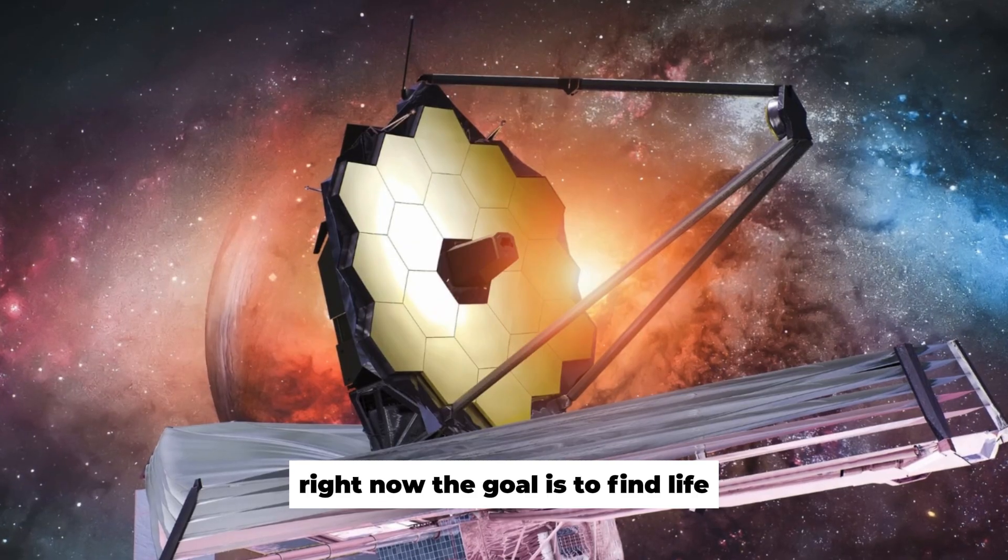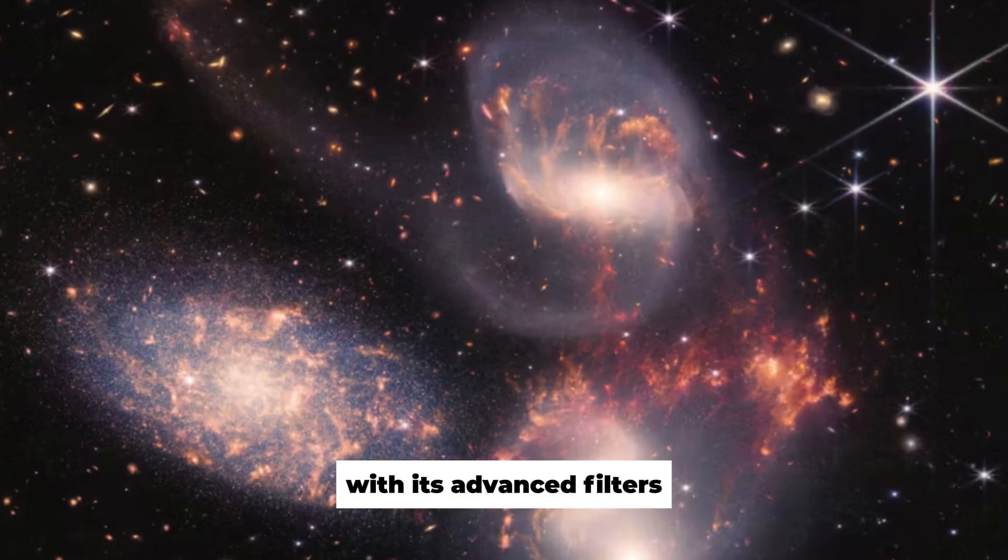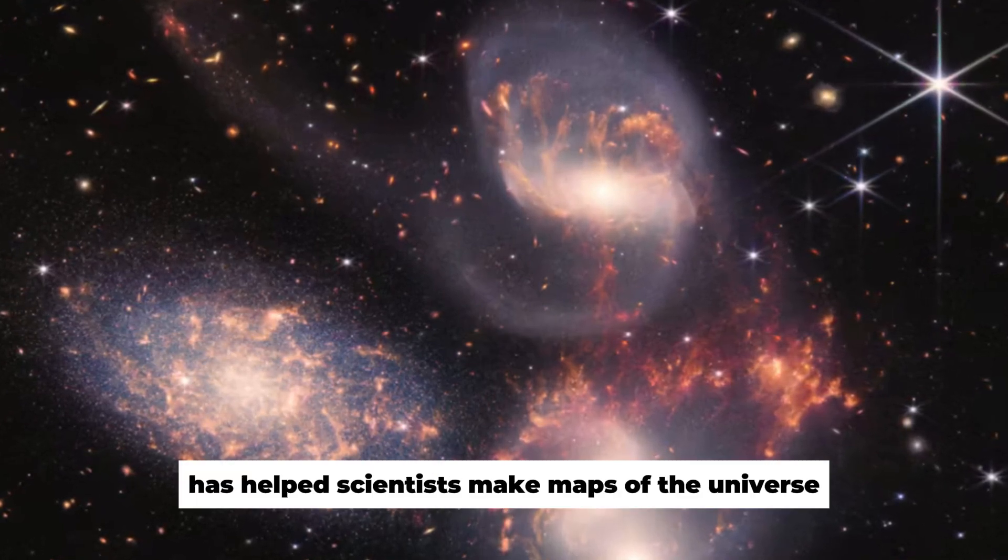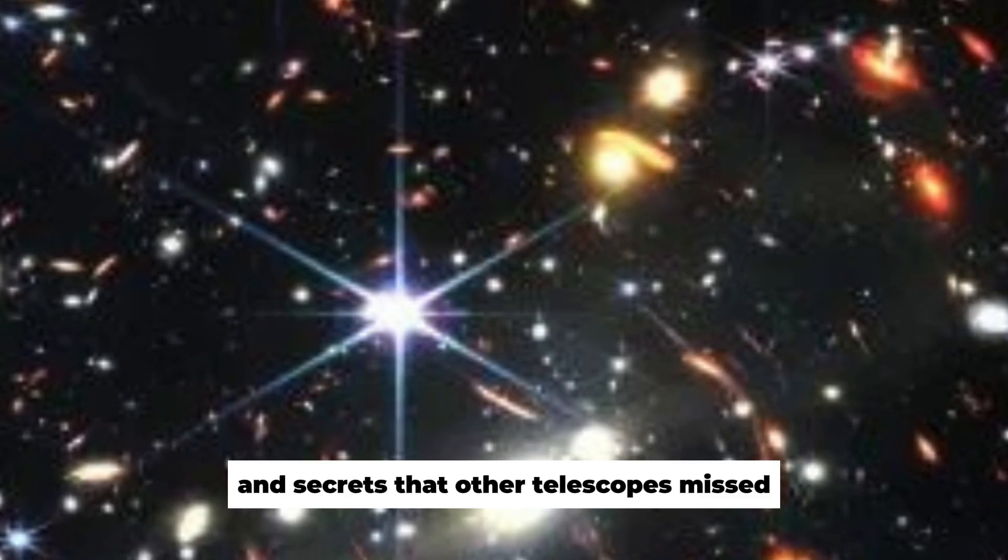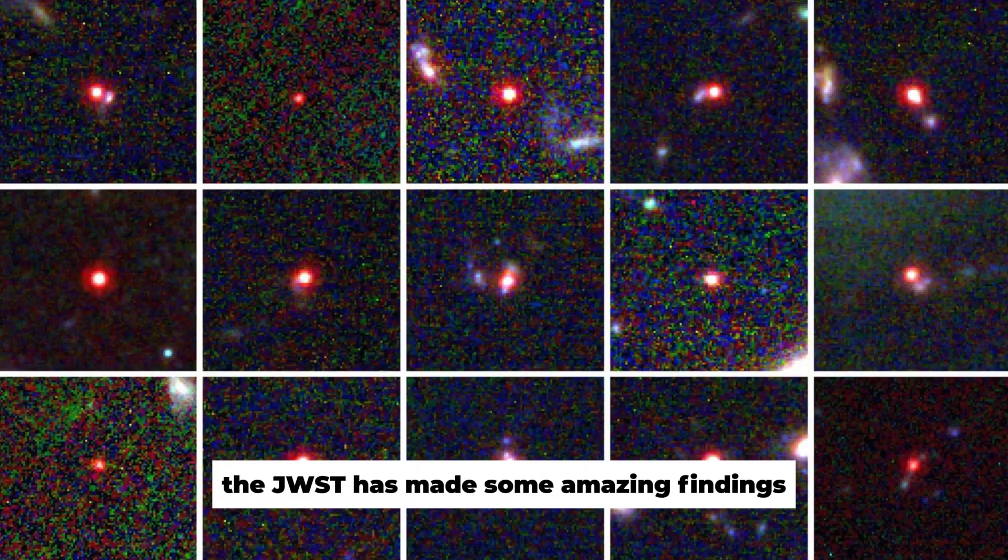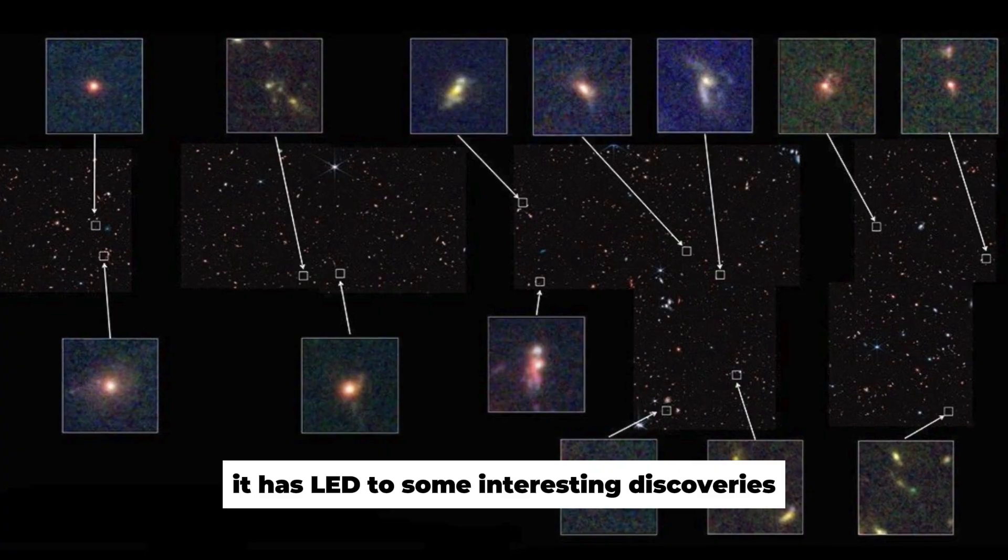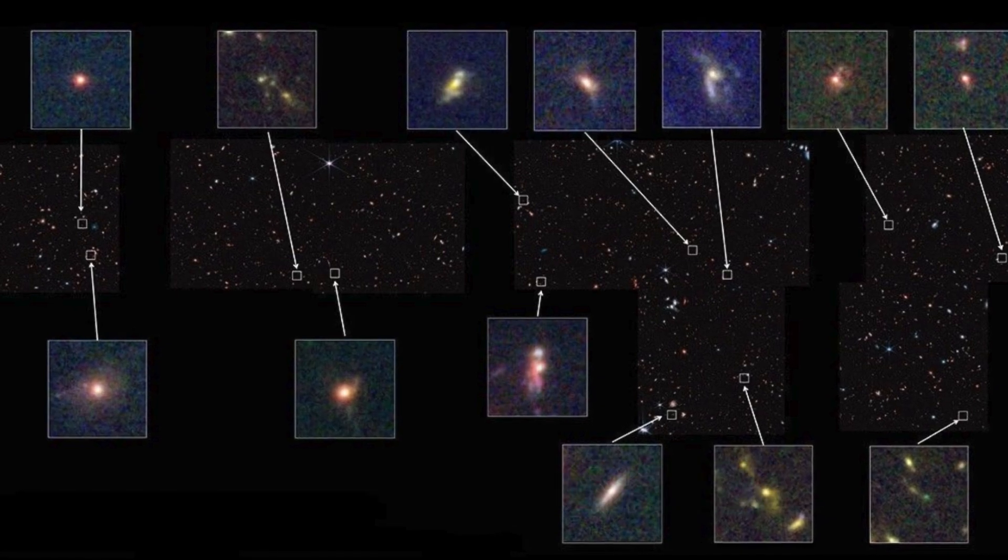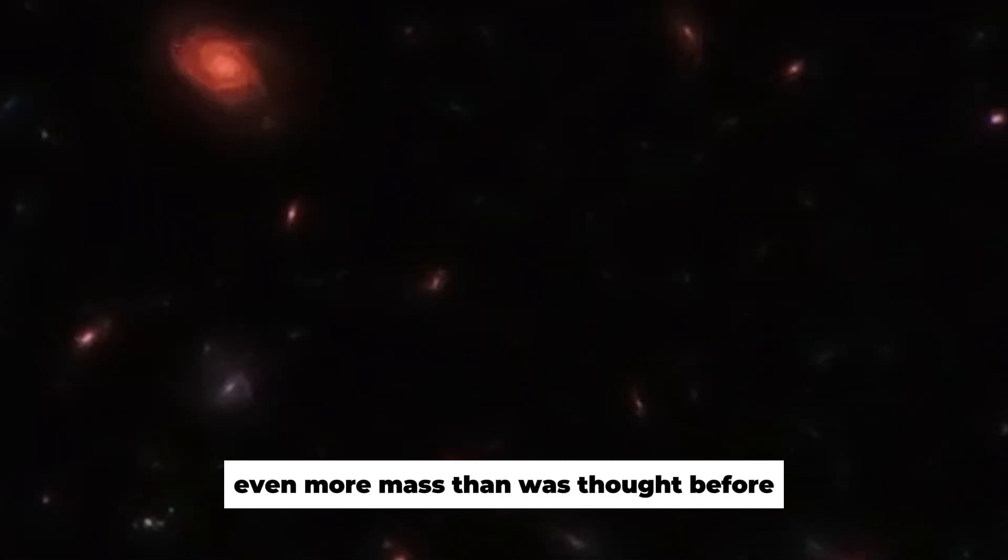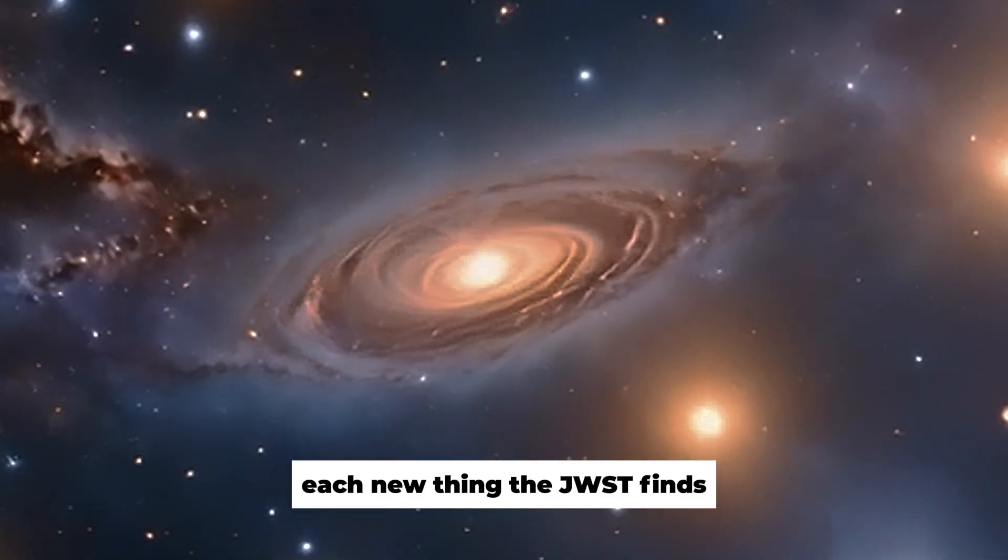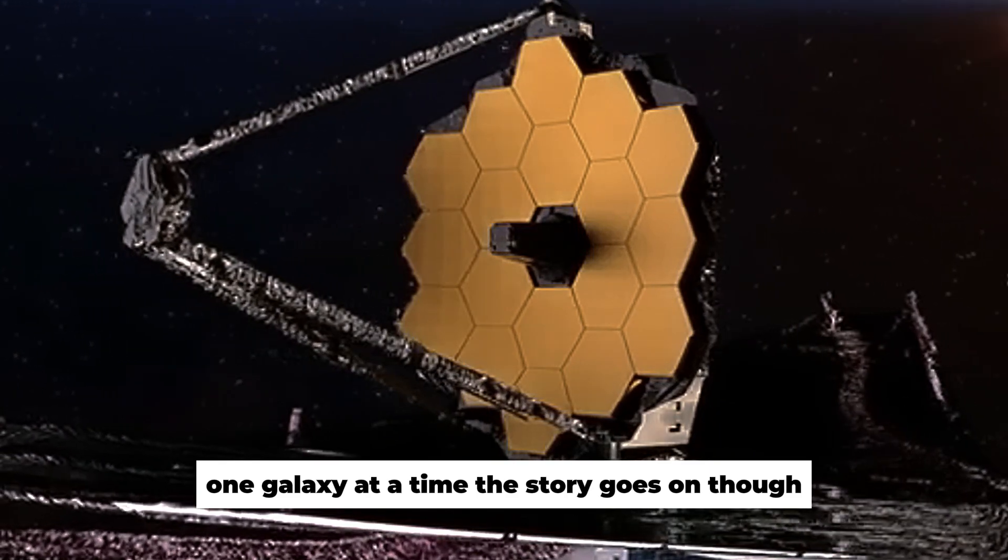Right now, the goal is to find life or signs of life beyond our solar system. With its advanced filters, the JWST has helped scientists make maps of the universe by finding features and secrets that other telescopes missed. The JWST has made some amazing findings, but it hasn't reached its full potential yet. It has led to some interesting discoveries. For example, it showed that the universe has even more mass than was thought before. Each new thing the JWST finds helps to solve the riddles of the universe, one galaxy at a time.